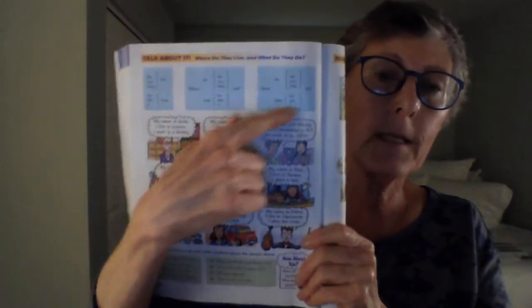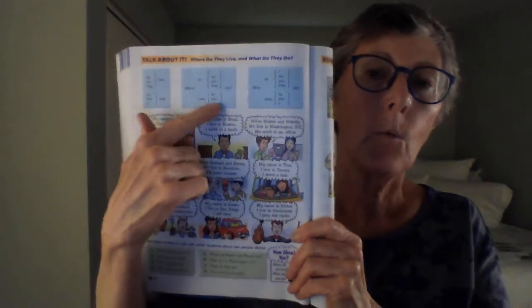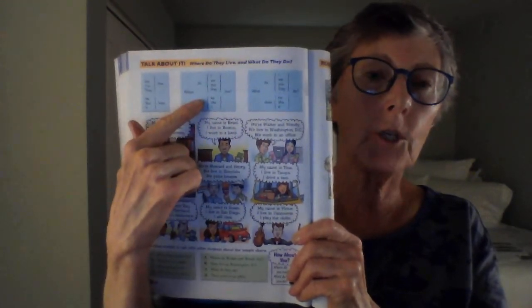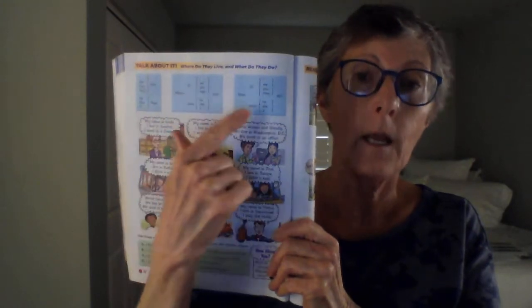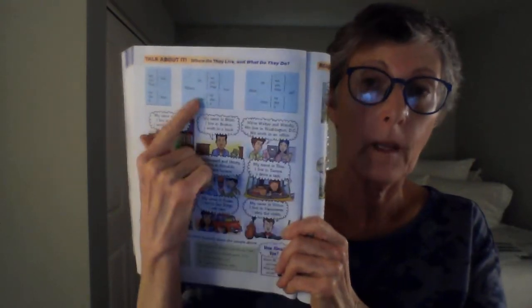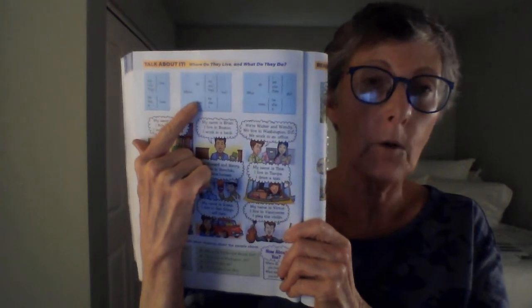Now the grammar for the simple present tense is up at the top. We have question where. Remember, it's where for location, what for information. Where for location.